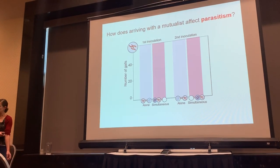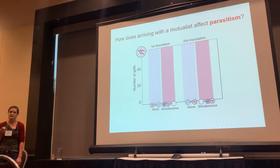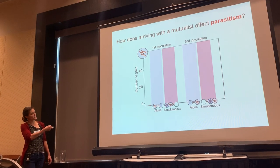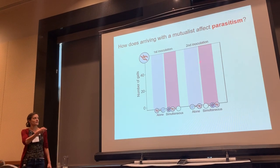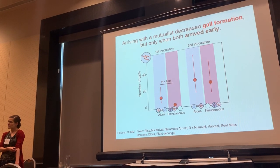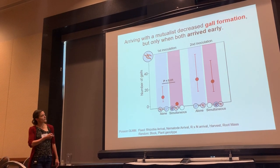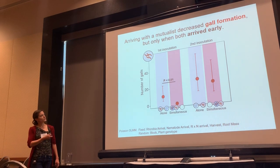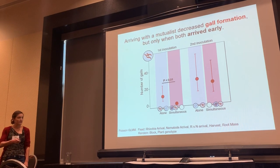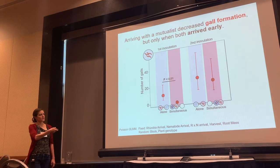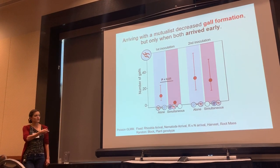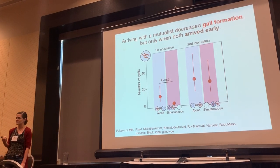Now asking the same question for parasitism: how does arriving with a mutualist impact the development of parasite infection? These data are set up similarly — plants that received nematodes in the first inoculation and nematodes in the second inoculation. Here we see a qualitatively similar pattern, but much more extreme. When we inoculated with rhizobia and nematodes simultaneously, we saw a huge decrease in gall formation — a huge decrease in the outcome of infection — but it was entirely restricted to when we inoculated plants early, when plants were relatively young. In this case, not a single one of the plants in this early simultaneous treatment formed a successful infection by the parasite.